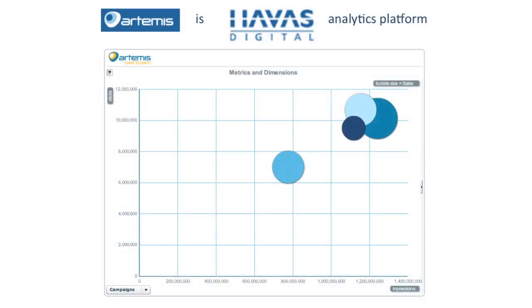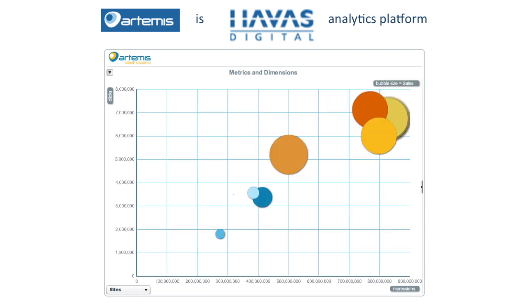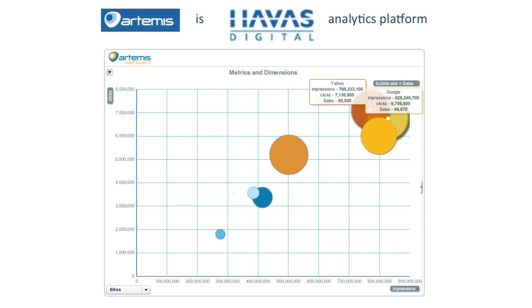That data comes in the form of impressions, clicks, or sales, like you see plotted on this graph, that we look at across dimensions such as campaigns. Here you have campaigns such as display, search campaigns, or social campaigns. If we drill down, we have another level of dimension, which is website. You have websites here plotted: Facebook, Google, Yahoo, et cetera.